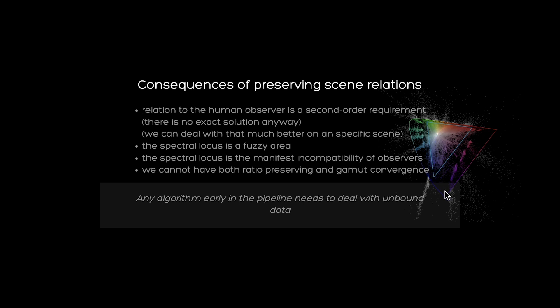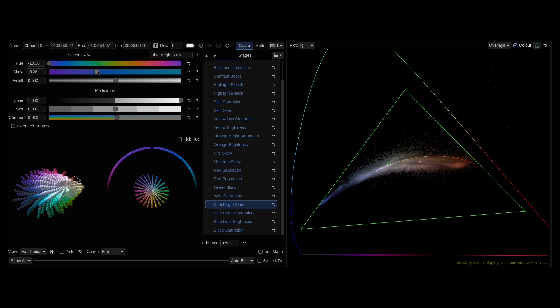Especially because we cannot determine any display-referred stimulus at this stage in the pipeline, the spectral locus defined against the human observer is not a hard edge as in other color disciplines, but a fuzzy area. In practice, the area around the spectral locus shows the incompatibility of different observers we need to deal with. We cannot have both preserving ratios and agreement on the edge of the spectral locus. Any workflow based on the human observer needs algorithms early in the pipeline that expect and deal with colorimetrically unsensible data.